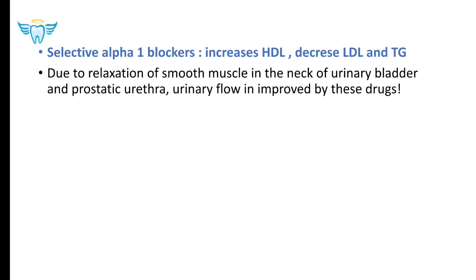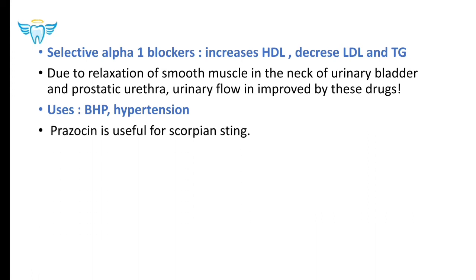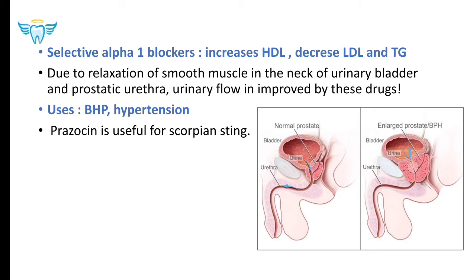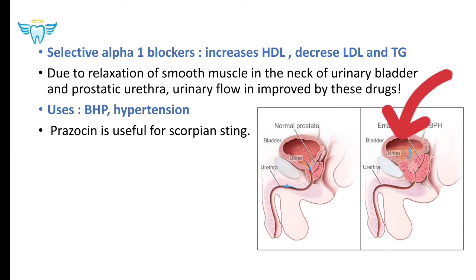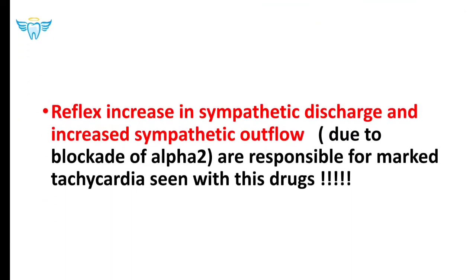Due to relaxation of smooth muscles in the neck of the urinary bladder and prostatic urethra, urinary flow is improved by these drugs, and that is why they are used in benign prostatic hyperplasia and hypertension. Prazosin is also useful for scorpion sting. In BPH, the enlarged prostate obstructs urine flow from the ureter to the urethra; alpha blockers relax those smooth muscles to relieve obstruction.